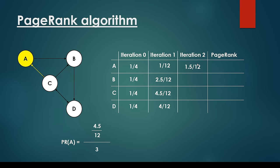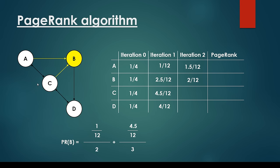What about the second iteration? A is 4.5/12 divided by 3 — because C is pointing to node A, and the page rank of C in the previous iteration is 4.5/12, divided by 3 because website C has 3 outgoing links. What about B? We have node A and node C pointing to node B. So we consider 1/12 divided by 2, which is the page rank of A in the previous iteration divided by its outgoing links, plus 4.5/12 divided by 3, which is the page rank of C divided by its 3 outgoing links.